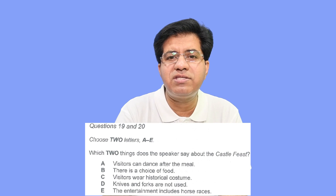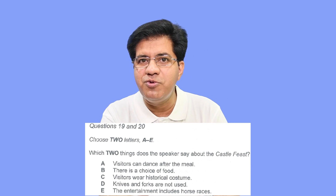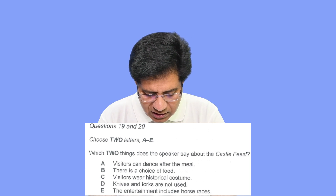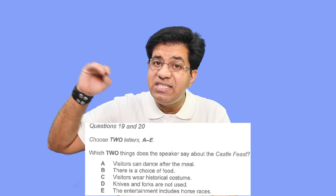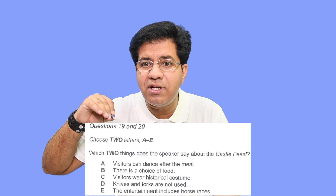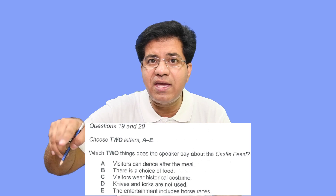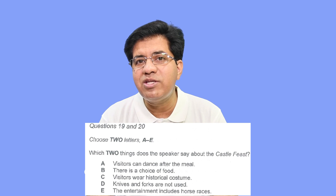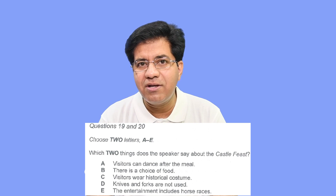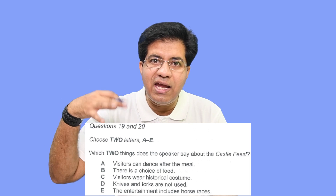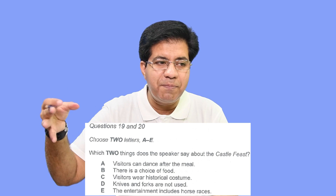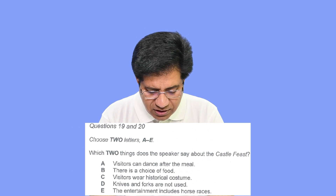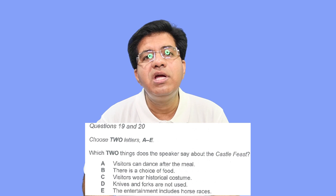Option C: 'visitors wear historical costume.' If visitors wear historical costume, this is the right option. If the people who are serving wear historical costume — not the visitors — then it's a trap. Usually these are traps because visitors paying a lot of money to also wear historical costumes is unlikely; the serving staff would be wearing that. So be careful.